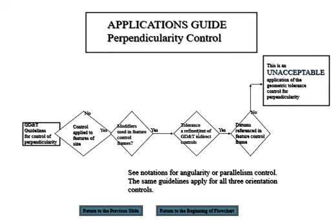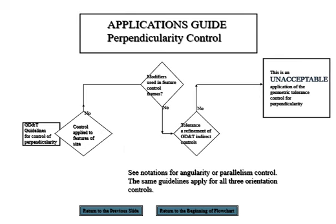Then after tolerance, we look at the datum. So you start with: is this control applied to the feature of size? Yes — look at the modifier. If you have it, yes — look at the tolerance, you have it. Then you look at the datum reference. If you don't have it, it's not acceptable.